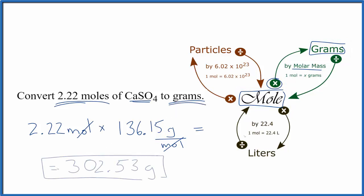So we end up with 302.53 grams of CaSO4. If you were given grams of CaSO4 and asked to find moles, you'd do the reverse.